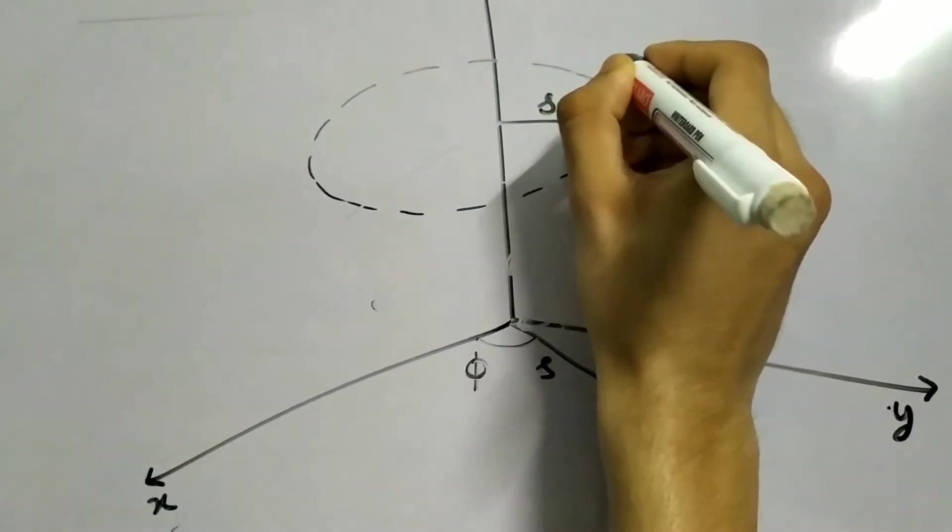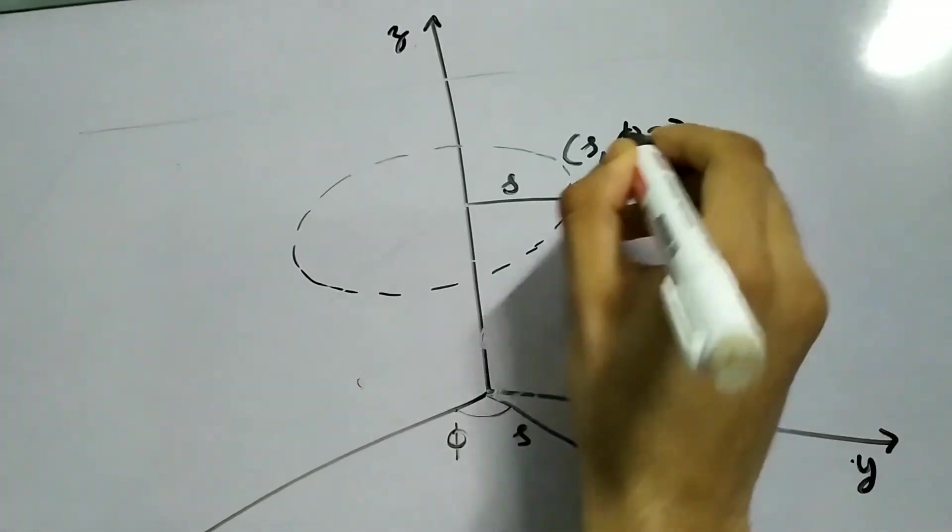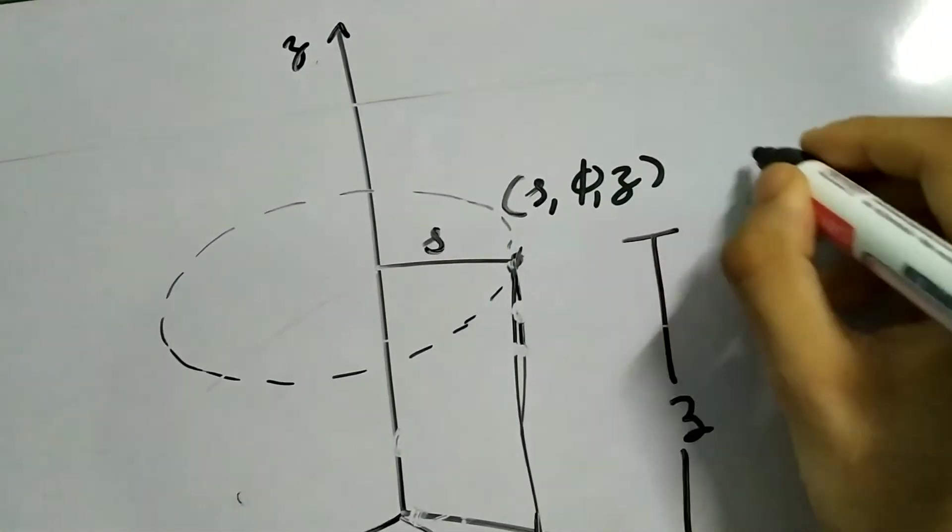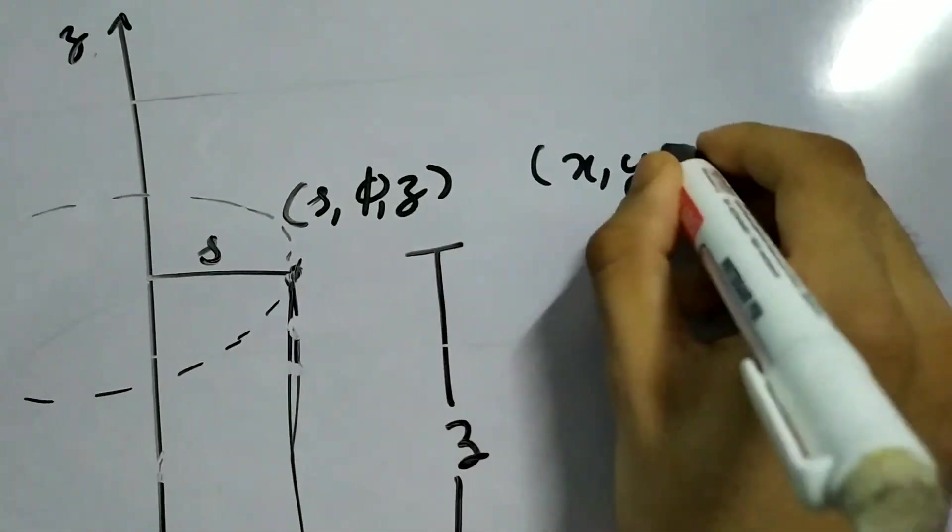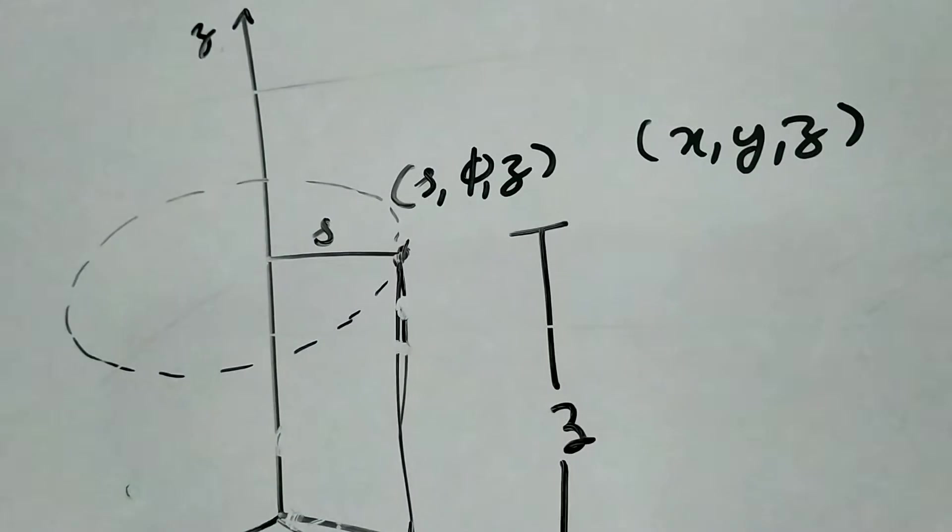And how do we write this? We write it as s, phi, z. In our Cartesian coordinates, we would have written it as x, y, z, right? So that's how we write it in our cylindrical coordinates. This is the convention.